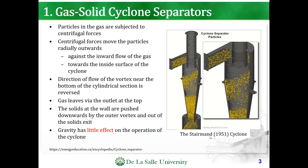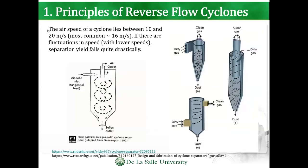This is an example of the Stairman cyclone, Stairman 1951. The airspeed of a cyclone lies between 10 and 20 meters per second; most common in typical designs are 16 meters per second. If there are fluctuations in speed, separation yields fall quite drastically, especially with lower speeds. You can see the dirty gas enters and the coarse particles are found at the bottom, while the cleaner gas is separated on top.